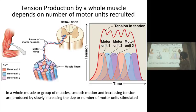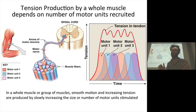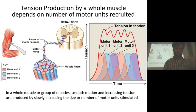So the tension produced in the tendon is greater than any single motor unit. But it's not the sum total of all motor units contracting simultaneously — unless you are at maximal exertion, which is not sustainable.